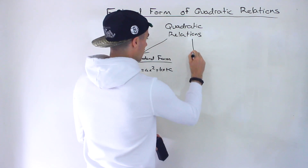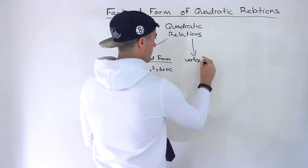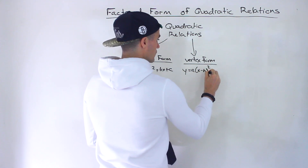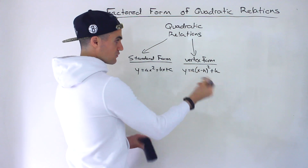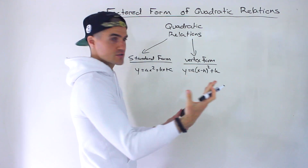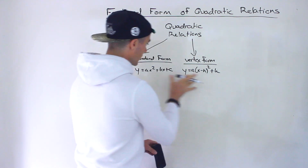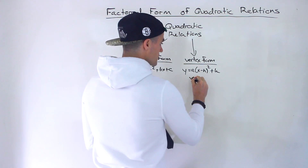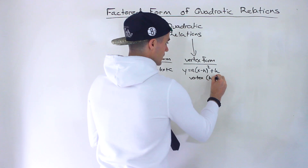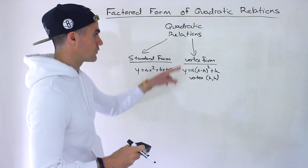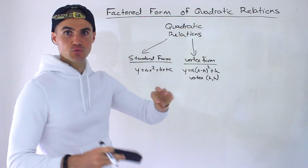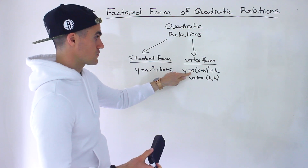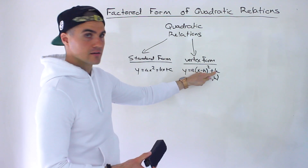Then we dealt with vertex form. The biggest characteristic of vertex form is being able to get the vertex right away, because from the standard form we can't get the vertex right away — we had to do a little bit more work. With vertex form, we can get the vertex right away as the h and k values. Also, whenever we took the base function y equals x squared and performed transformations on it, we'd end up in that format, because the transformations determine the a, h, and k values.